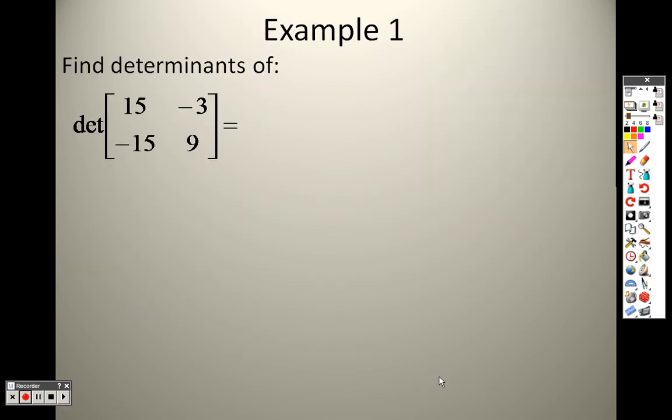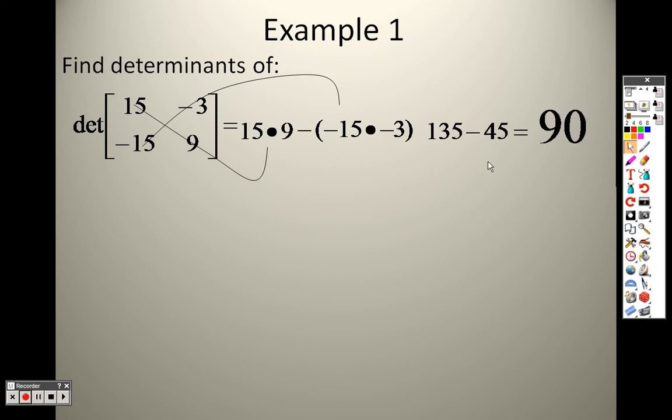So example one, to find the determinant of this. It's down: 15 times 9 minus negative 15 times negative 3. Negative 15 times negative 3 is 45, 15 times 9 is 135, so 90 is your answer when you subtract.